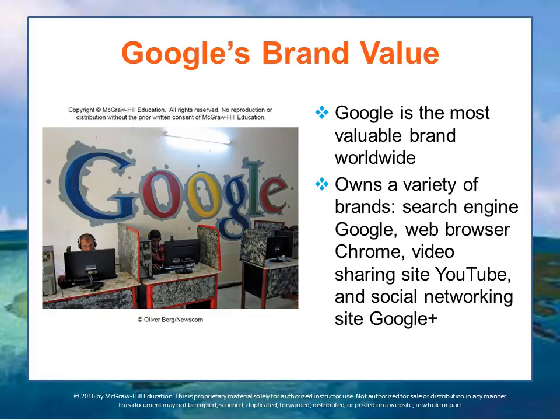Brands have value and those brand values can be measured, albeit imprecisely. Google, by some measures, is the most valuable brand worldwide. It owns a variety of brands: the Google search engine, the web browser Chrome, the video sharing site YouTube, and the social networking site Google+. That's one of the most recognizable brands in the world, and there's a whole area of trying to understand how one values brands and the change in those brand values over time.